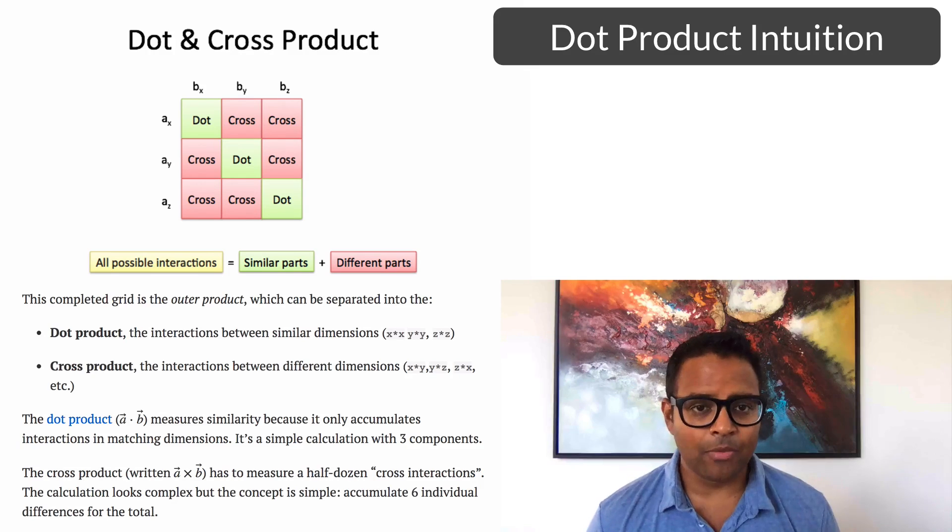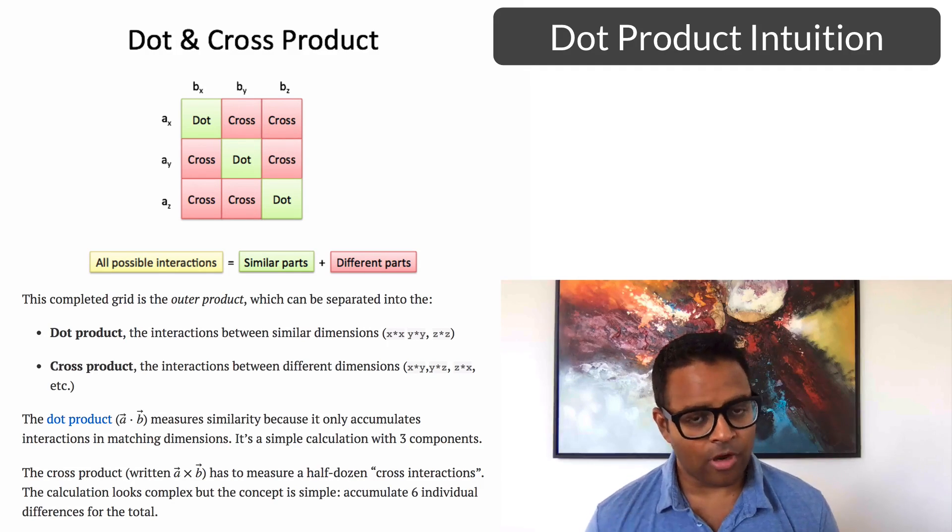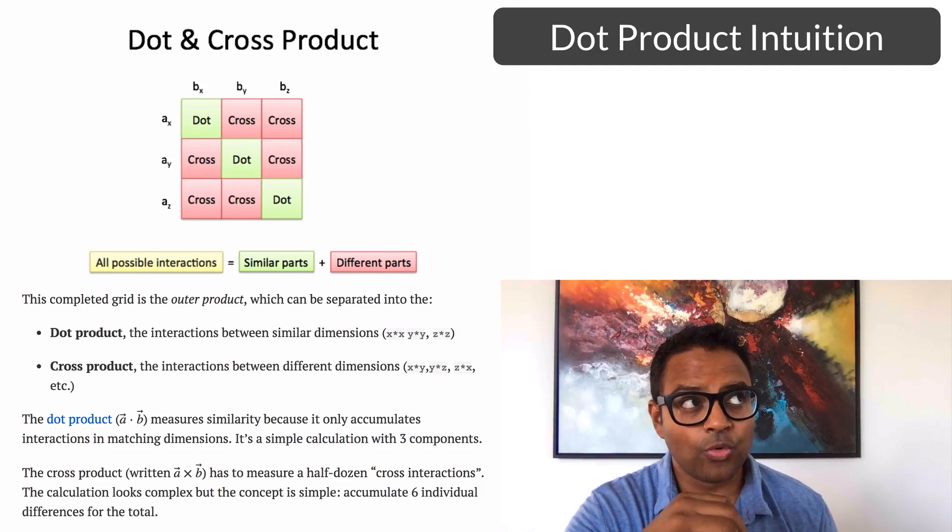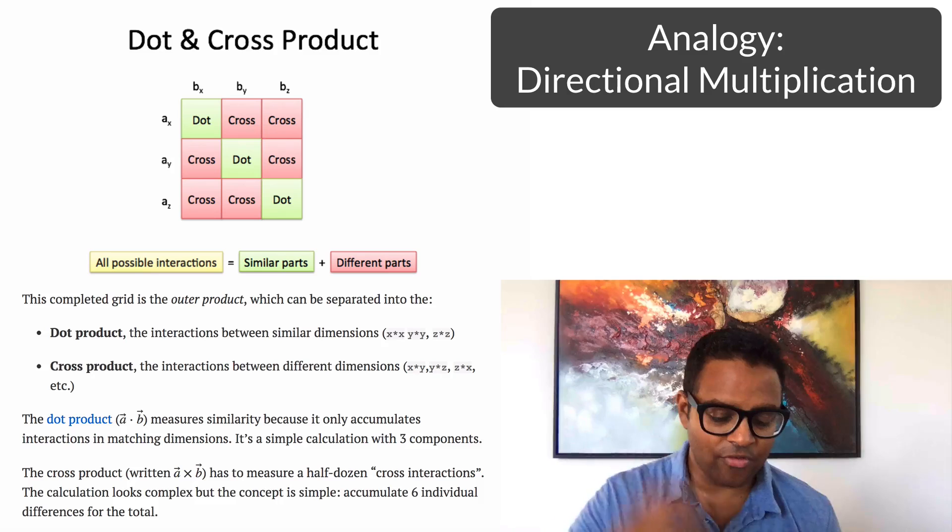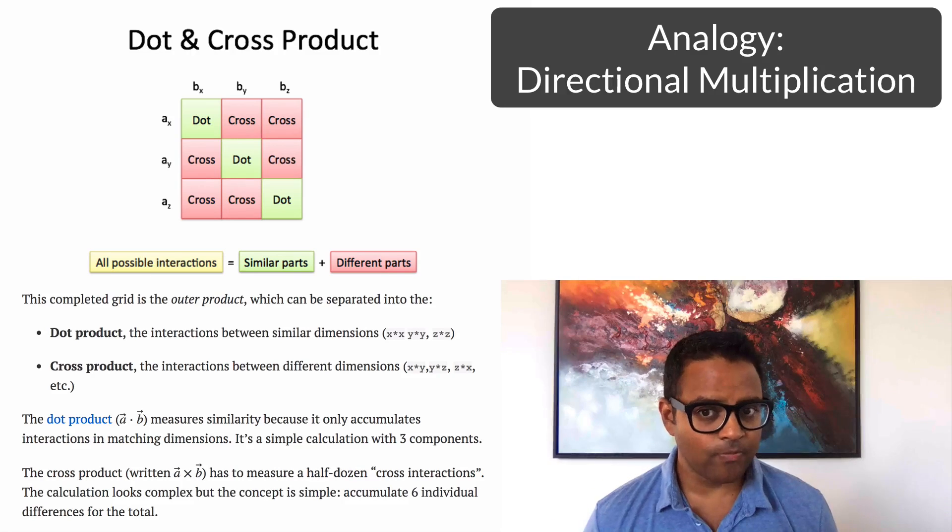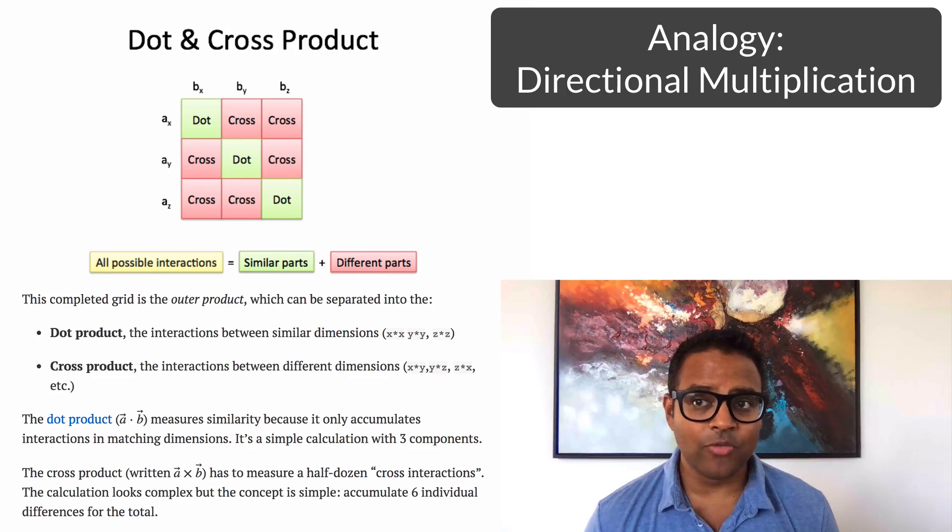So the main thing to keep in mind with the dot product and its neighbor the cross product is that we're trying to do a directional multiplication. That's kind of the intuition that I have, is that we're basically doing multiplication and we want to keep track of things that are moving in the same direction.